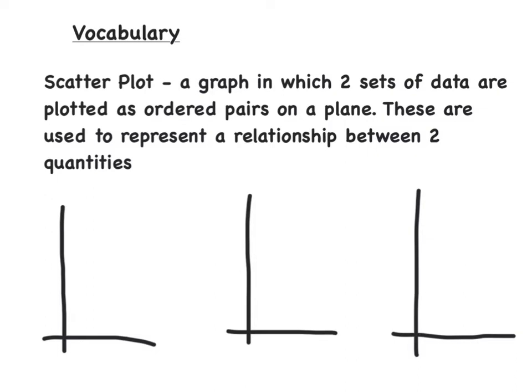The vocabulary for the lesson is, what's a scatter plot? A scatter plot is basically just a graph in which two sets of data are plotted as ordered pairs on a plane, or on a graph.